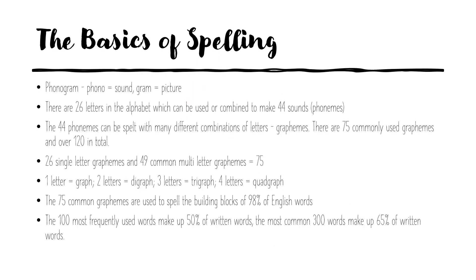So let's start with the basics. A phonogram is sometimes used to describe the sound and then the picture that is made. The phono means sound, gram means picture, and the letter is the picture. So when you see the letter A, you think of the sound A. When you see the letter T, you think of the sound T because you see the picture of the letter T.